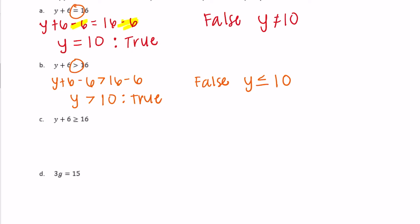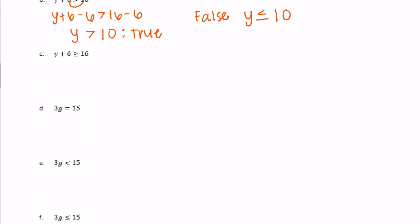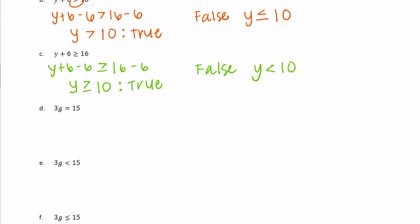Part c: y plus 6 is greater than or equal to 16. Solving: y plus 6 minus 6 is greater than or equal to 16 minus 6, so y is greater than or equal to 10 for it to be true. For it to be false, y would have to be less than 10 — not less than or equal to, since we already used the 'or equal to' sign — so just anything less than 10.